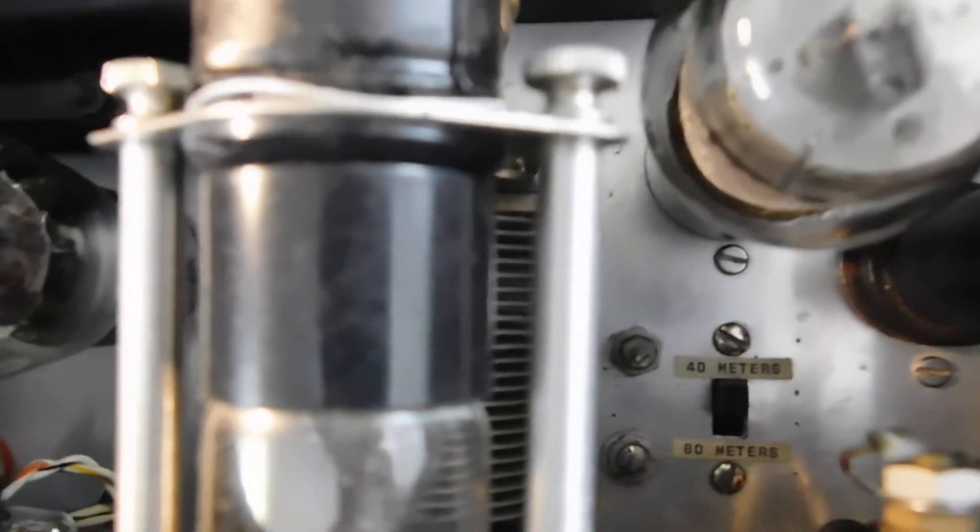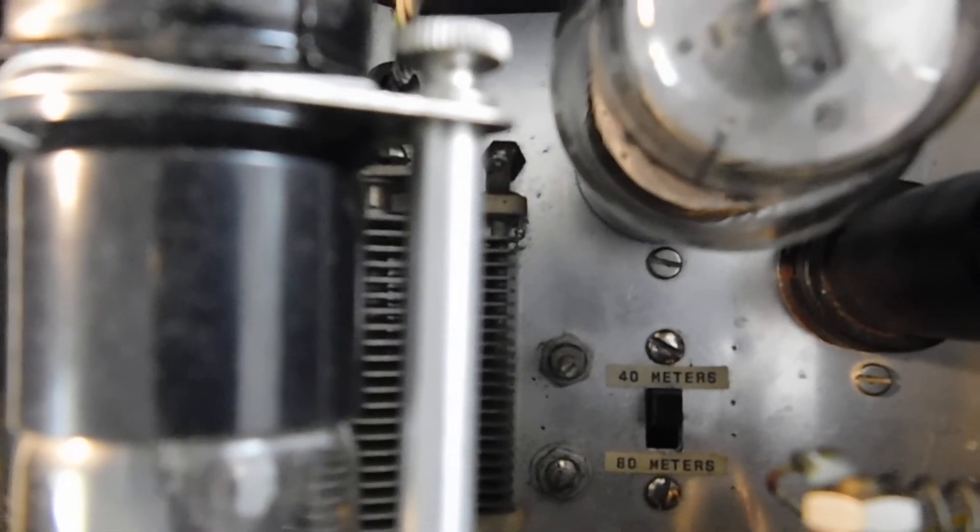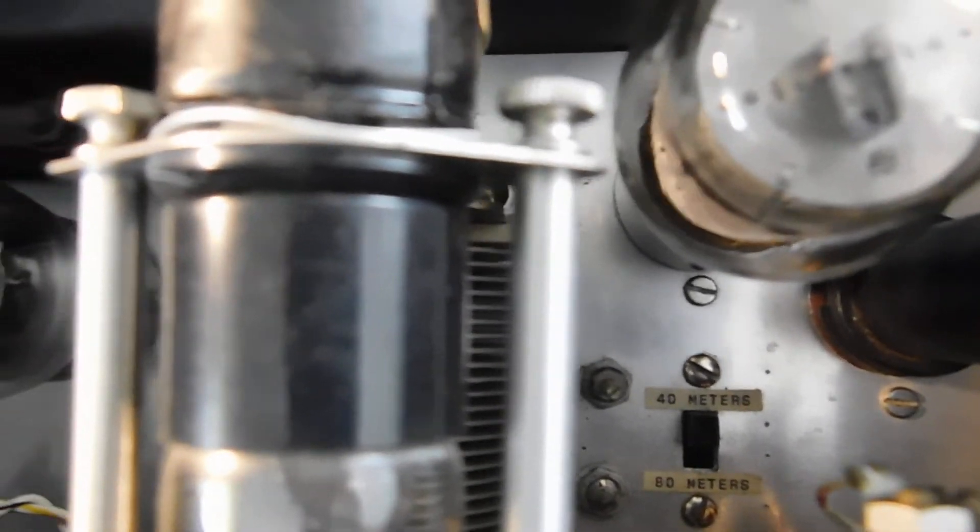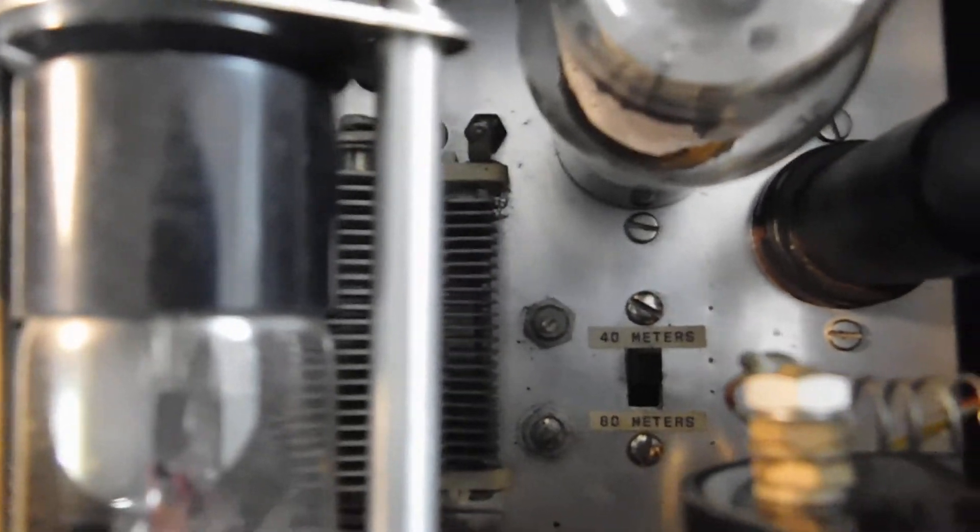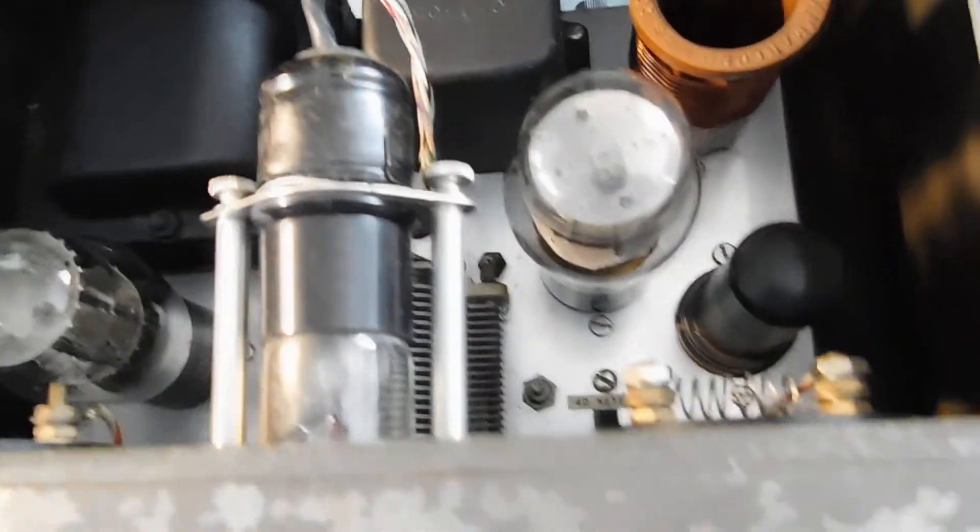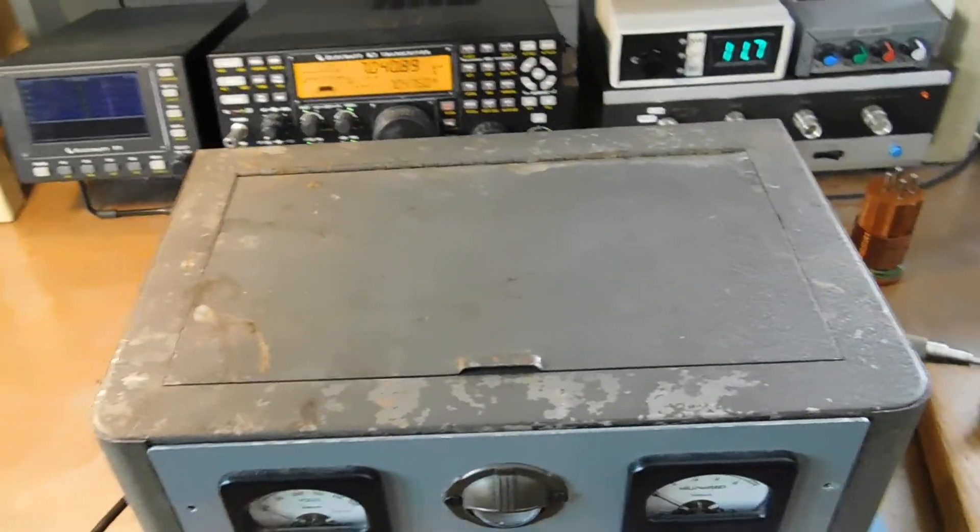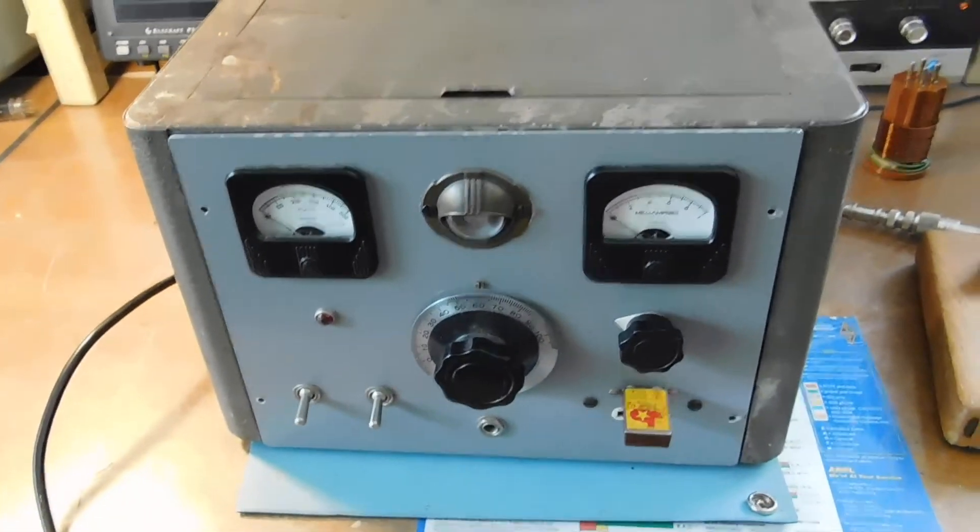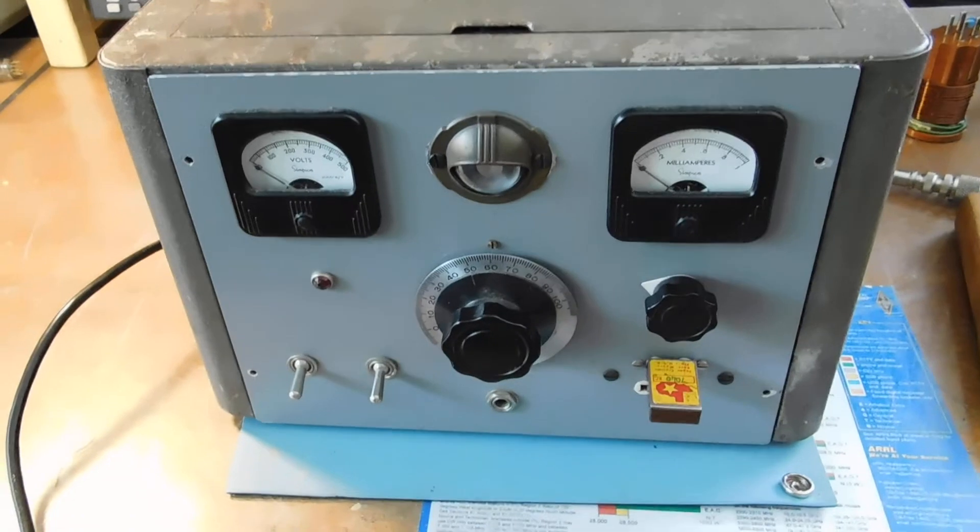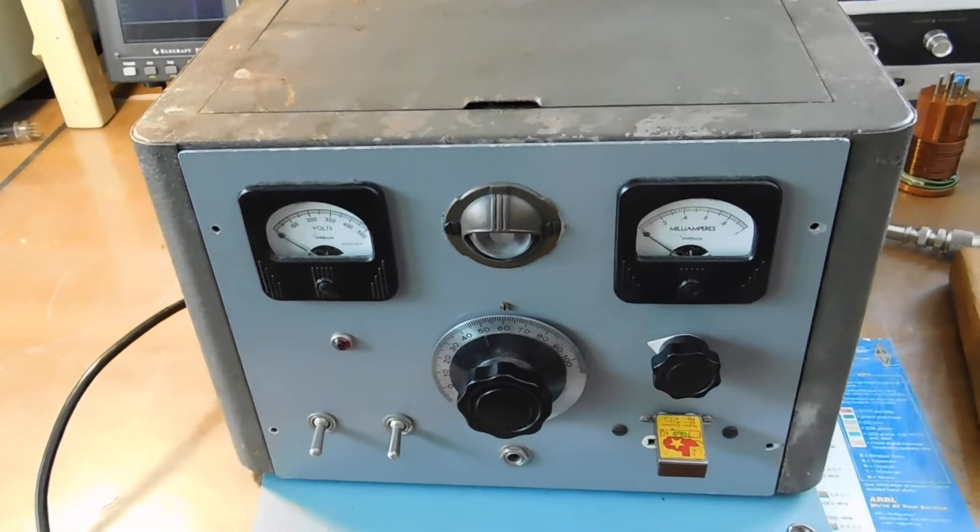And there's a switch down there for 40 or 80 meters. Got to make sure that's in the right position. That takes care of the input tuning, the grid tuning. But very very nice. A little TLC on that cute little cabinet there, and some labels on the front, and it'll look pretty good. So let's fire it up.